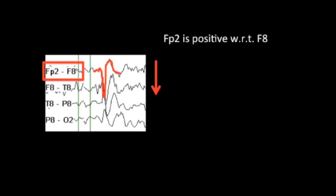Using our polarity rules, this would suggest that either FP2 is positive with respect to F8, or F8 is negative with respect to FP2. We'll have to look at more channels before we can come to any further conclusions.